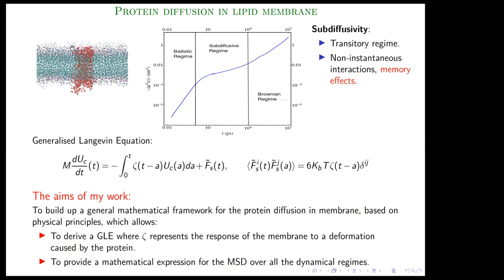From the MD simulation I obtained a numerical MSD where you can easily recognize the ballistic regime (t²), the Brownian regime (proportional to t), but also an additional intermediate regime with no well-defined time dependence. This subdiffusive regime is not described by a Langevin equation — this is molecular dynamics simulation, which is purely deterministic.